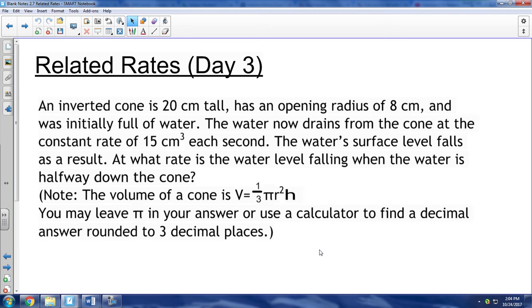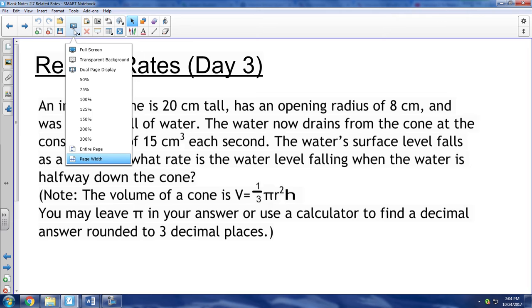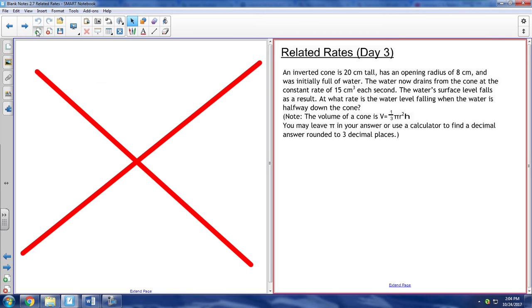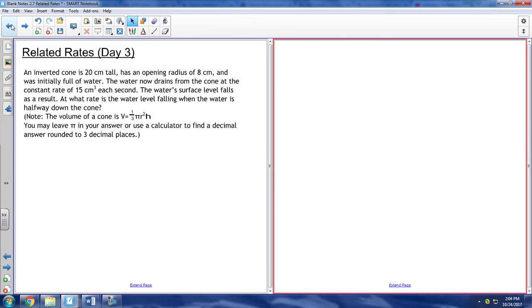So we have a cone that's inverted, so it's flipped upside down. It has a radius at the top of eight centimeters, and it was full of water, so it's like a funnel. The water's draining at a constant rate of 15 centimeters cubed a second, so that's volume. And then the surface level of the water is falling, obviously, so the water level is going down. We want to know at what level is the water falling when it's halfway down the cone.